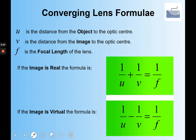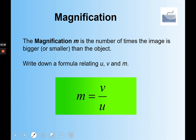The formula for a converging lens is: 1/u + 1/v = 1/f, where f is the focal length, u is the distance from the object to the optic center, and v is the distance from the image to the optic center. For a real image, v is positive; for a virtual image, v is negative. The magnification formula is v over u.